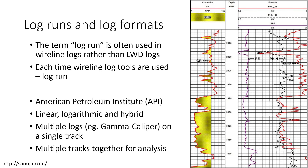In terms of measurements, we use the API — American Petroleum Institute — standard for things like gamma ray. We also use linear, logarithmic, or hybrid scales, such as this one measuring densities. You can use multiple logs on a single track. For example, this is one track and this is a second track. One track can have three different logs — here's one, here's another, and this one in red. You can have multiple logs in a single track and multiple tracks next to each other, correlated with depth to analyze your information.